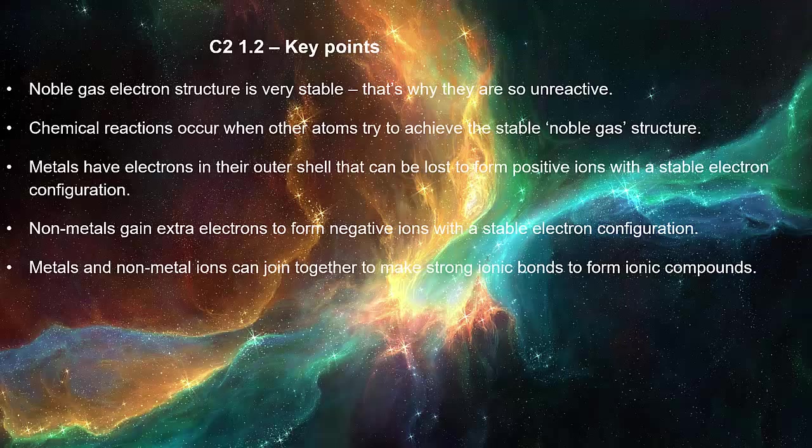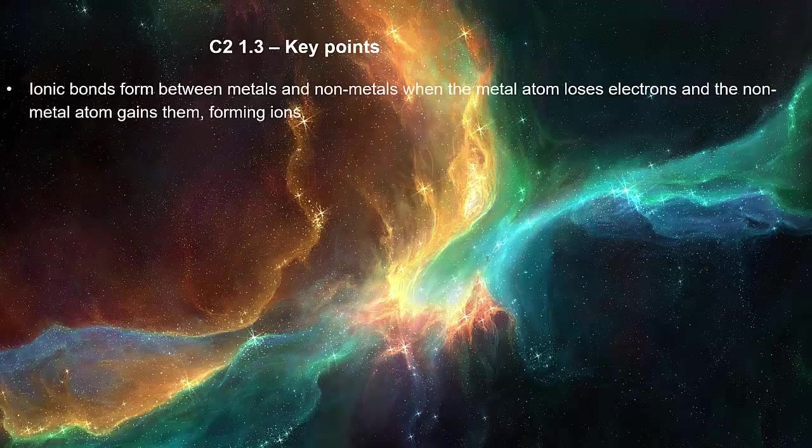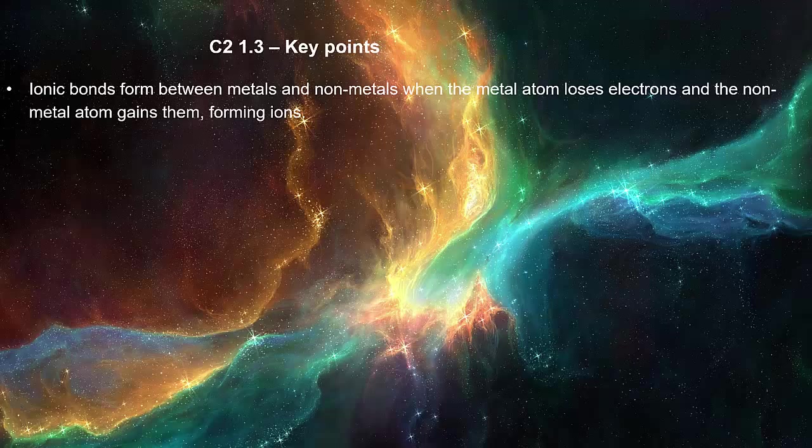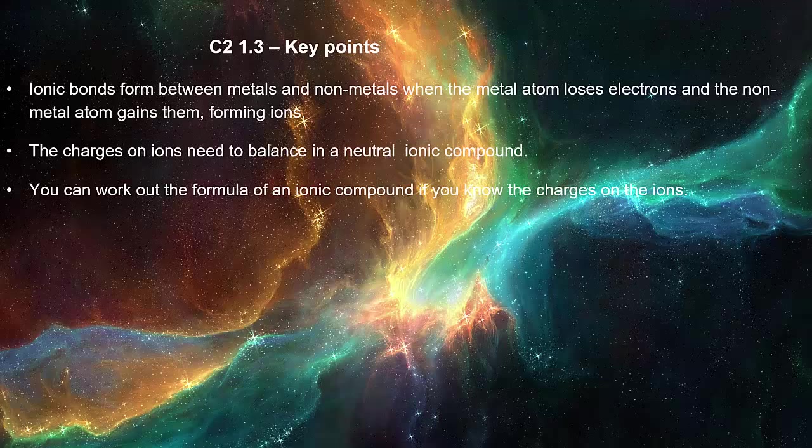Metals and non-metal ions can join together to make strong ionic bonds to form ionic compounds. Ionic bonds form between metals and non-metals when the metal atom loses electrons and the non-metal atom gains them forming ions. The charges on ions need to balance in a neutral ionic compound. You can work out the formula of an ionic compound if you know the charges on the ions.